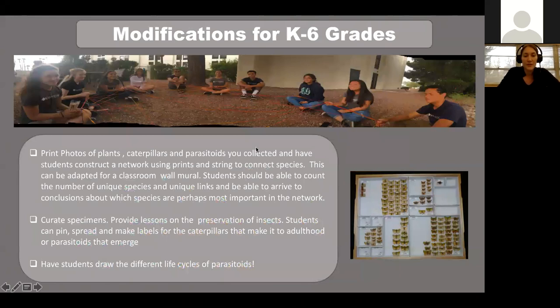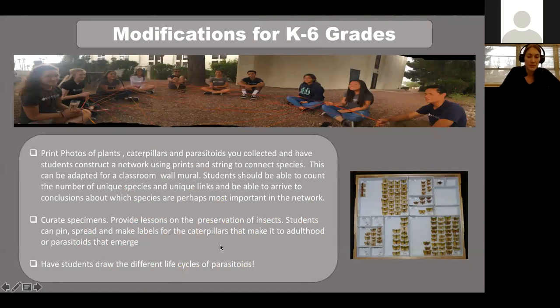For the younger grades, modifications for K through 6 would skip the code portion. You could print photos of the different species you collect and either make a wall network mural or have each student make their own little network using string on construction paper — making it done by hand rather than through code. You can also curate the lesson to be about life cycles and development, focusing on the more obscure insects and lesser-known life cycles to start changing the perception of parasitoids and insects.